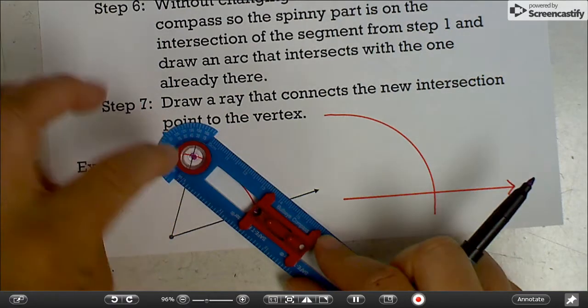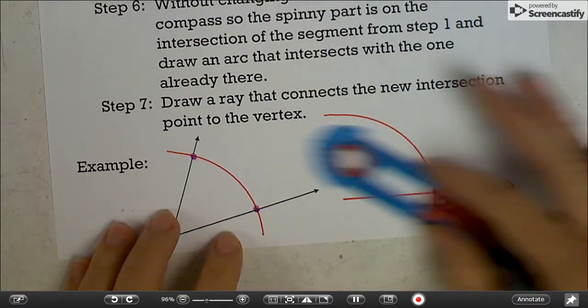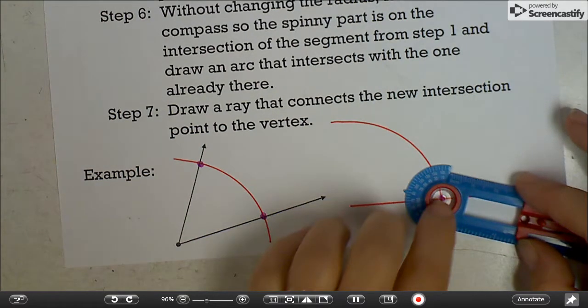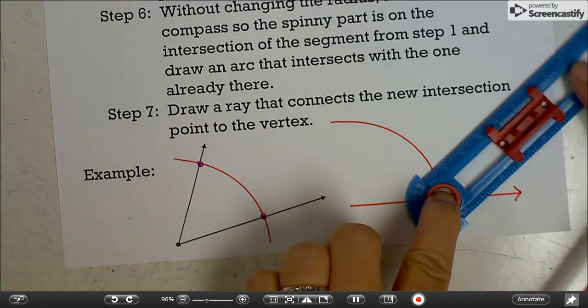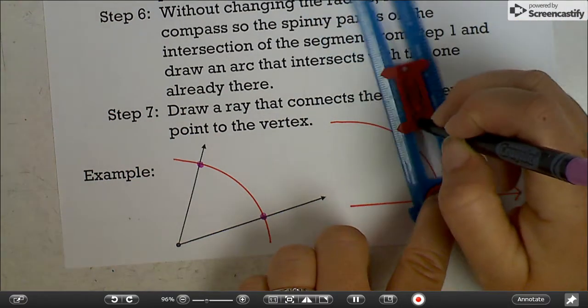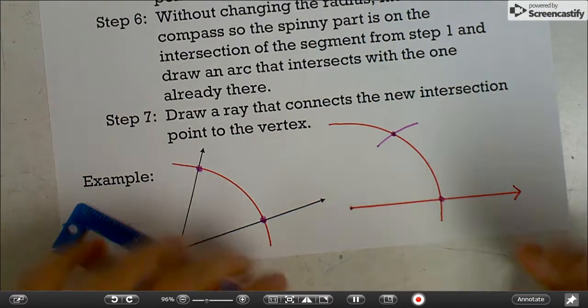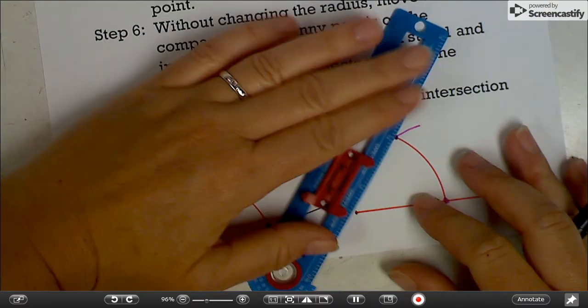And then you're going to take the spinner and put it on the point you created in your image and go over there. Now, if I tried to draw an arc out here, it wouldn't be helpful. We want it to intersect here somewhere. So I'm going to turn it and draw just a little piece of an arc. That creates a point. And we're going to connect that to the endpoint, which makes the new ray.